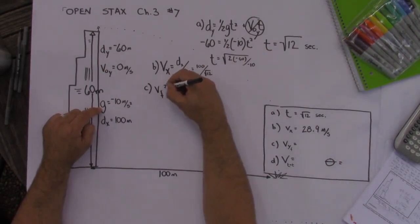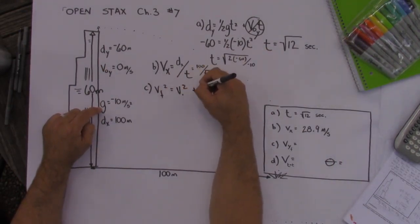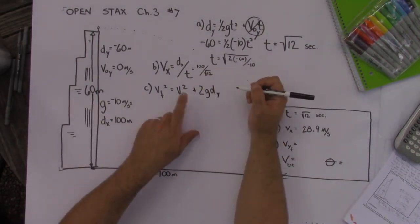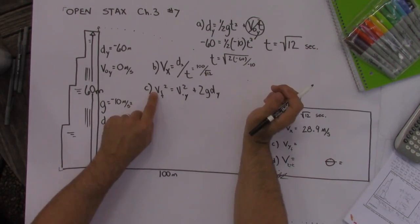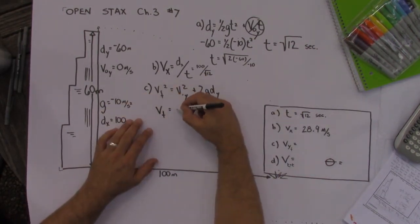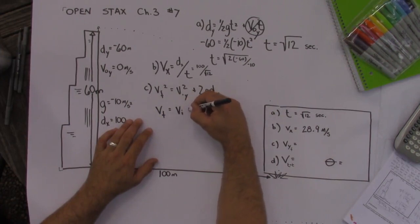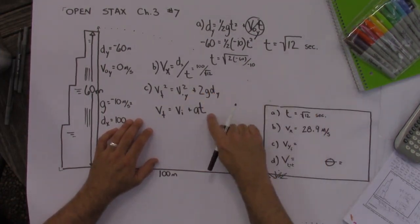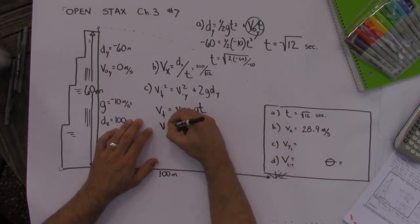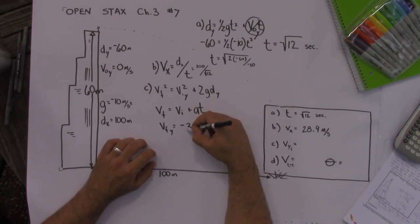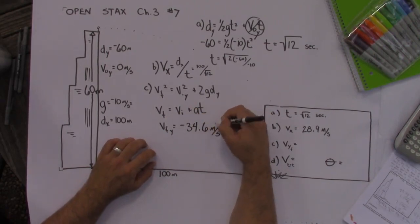So now a couple different formulas could work. I could use v final squared equals v initial squared plus 2ad because I know the displacement in the y direction and gravity and the initial velocity in the y direction. That would work. Or I could use this formula. The final velocity is the initial velocity plus the acceleration times time. Well now that I have time I'm just going to plug in the root 12 there and it turns out the final velocity in the y direction is negative 34.6 meters per second.